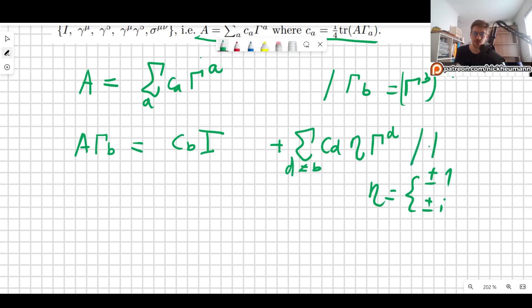And now we take the trace of this. The trace, as I've explained, is a very useful thing, because it allows many things to be simplified, as you're about to see. The trace of the left side is the matrix times gamma B. And then we have c_B, so we have the trace of c_B times the identity matrix plus the trace of the sum of D, which is different from B, c_D eta gamma D.